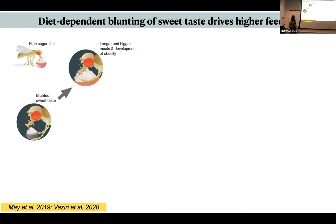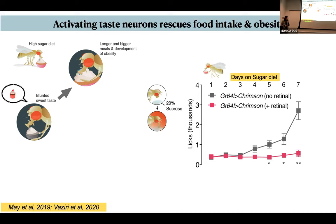When I told you that sucrose blunts the sensory system of flies, we found that this blunting was a direct driver of higher intake. Flies eat two meals a day — a breakfast and a dinner — and what we found is that on a high sugar diet, their meals became longer, almost doubled, almost as if they had a hard time terminating their meals. When we used optogenetics in a closed-loop system to activate the sweet sensory neurons only when the fly was licking the food — so they felt like they were sensing sugar — we could completely block the escalation in feeding behavior and also block the increase in fat mass, protecting them from diet-induced obesity.